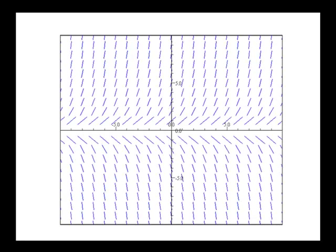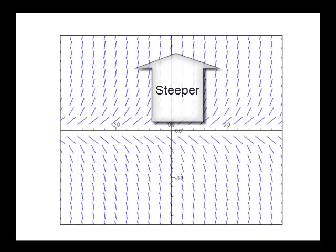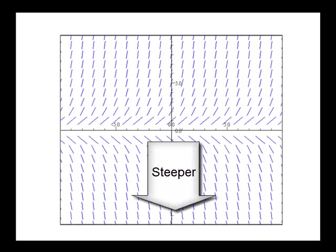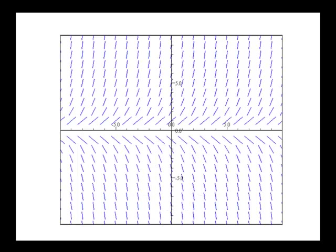So a couple things to notice. Notice that as we go up from the x-axis, our slope becomes steeper and steeper. As we go down from the x-axis, our slope also becomes steeper and steeper in the negative direction, because y becomes more and more negative. So we have our slope field.